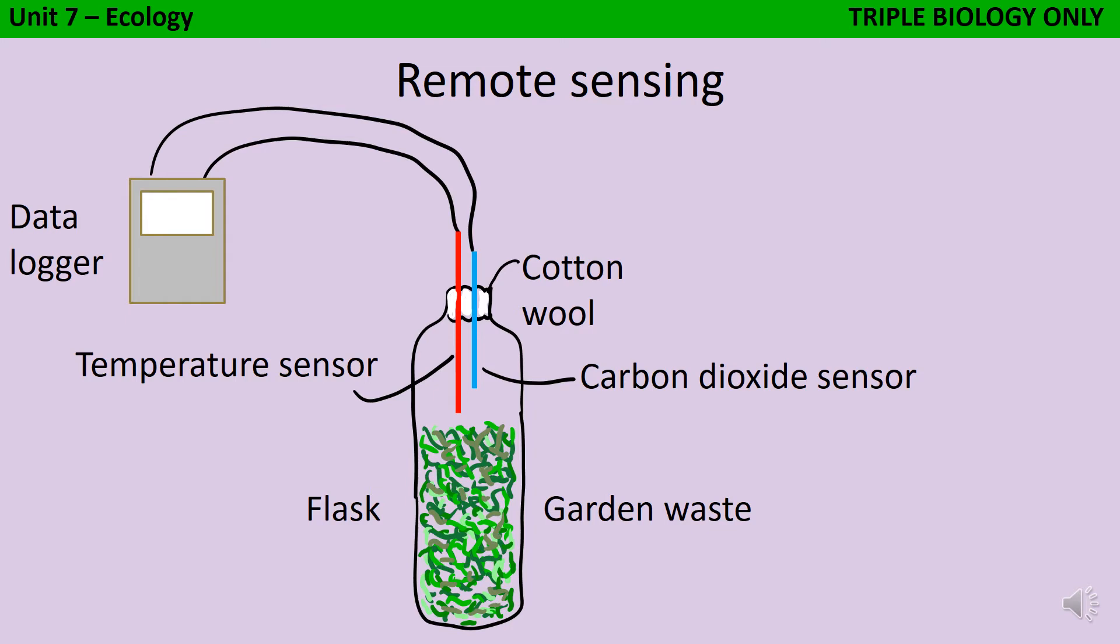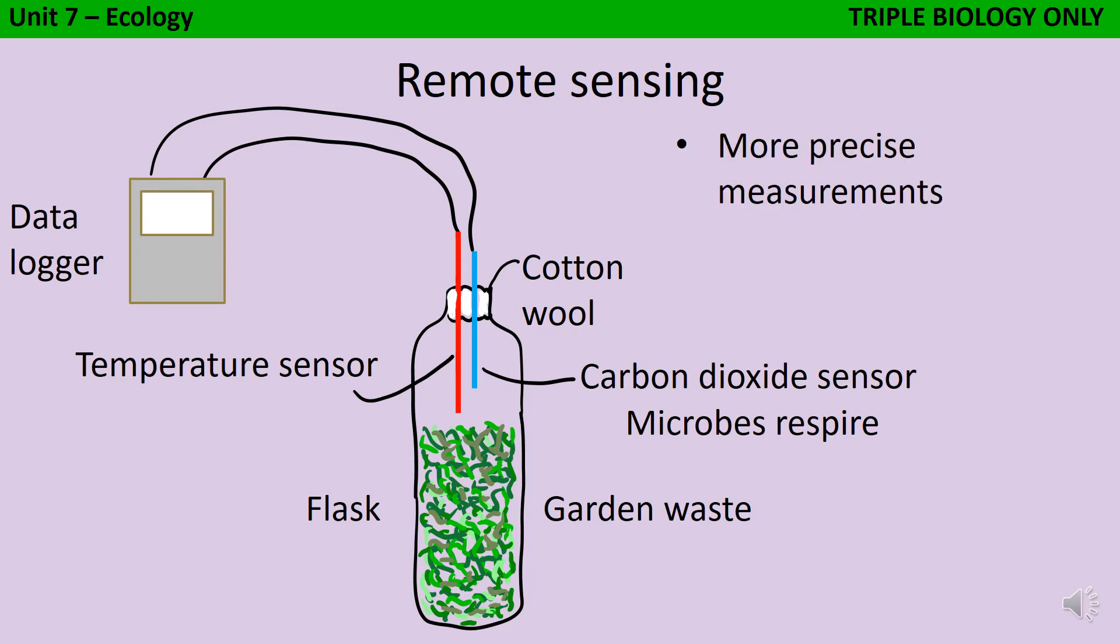And one really good way to get this is using a data logger. So, you could have a data logger that's attached to a temperature sensor and also attached to a carbon dioxide sensor. Both of those sensors are going to give you a result because the microorganisms are going to be respiring and in doing so, they release carbon dioxide and also they increase the temperature as they release that energy. The advantage of using a data logger rather than just standing there with a thermometer in your hand is that you're going to get more precise measurements, but also you can be continuously monitoring and you can monitor even if you're not there in person.